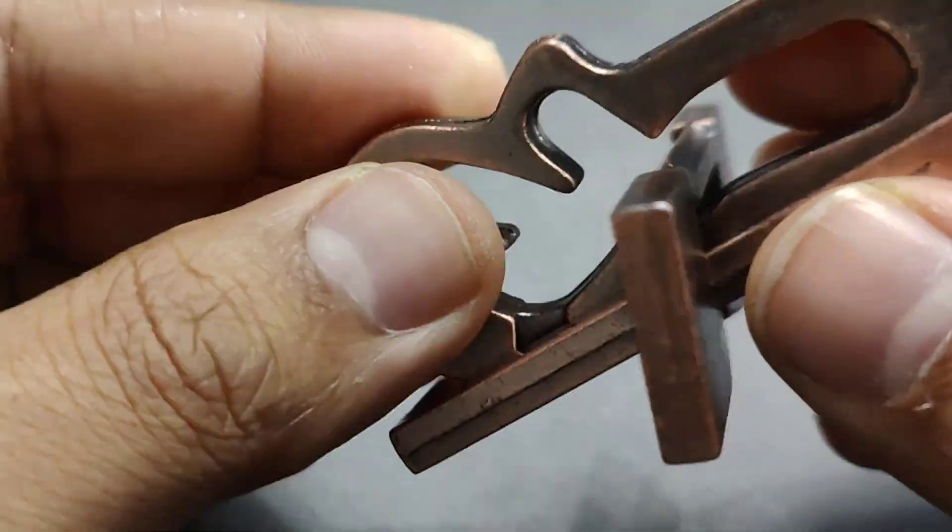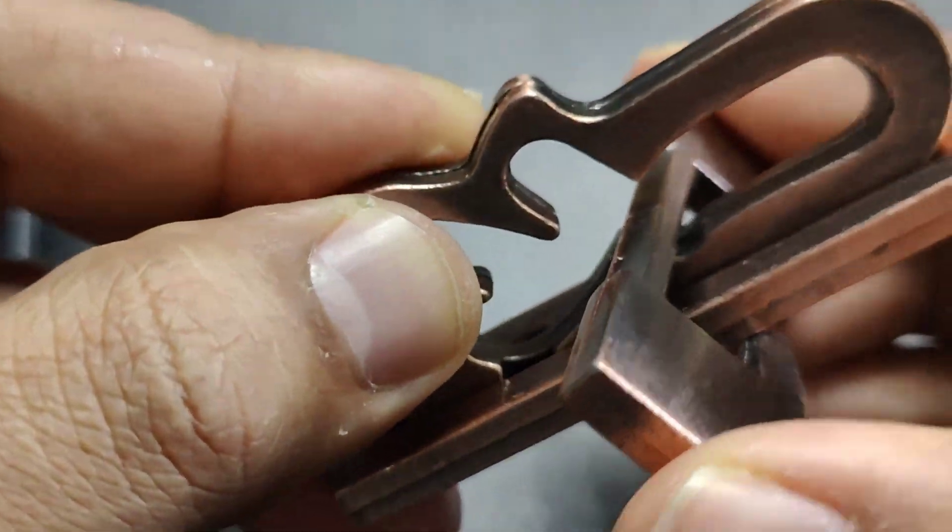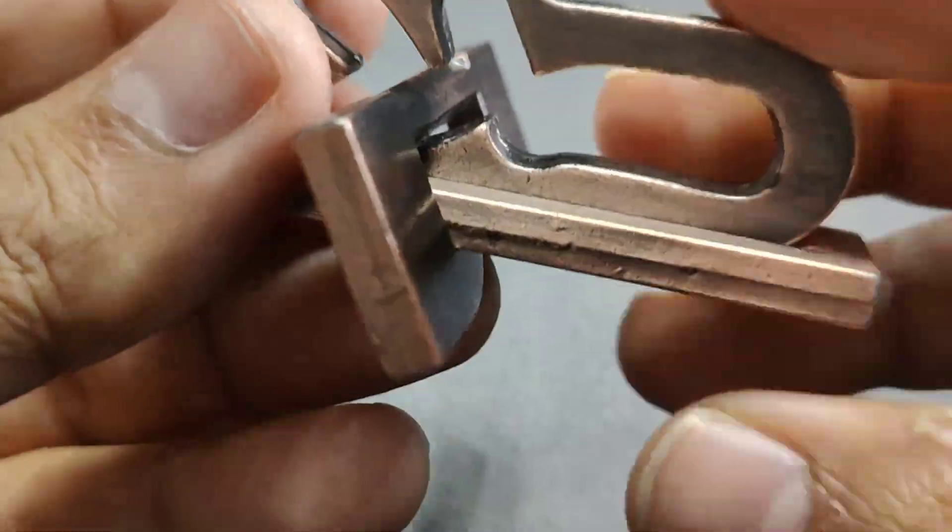Again slide the rectangular piece to the other side and there you go, the puzzle is back to the original shape.